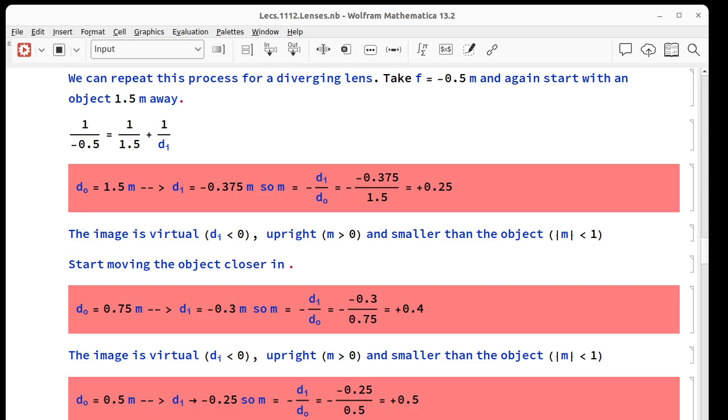What if we repeat this exercise for a diverging lens? Now we say we have f equal to negative 0.5. We again start 1.5 meters away and use the thin lens equation. We solve for di, and we get negative 0.375, so we get a virtual image. Our m is the negative of a negative, so we get plus 0.25.